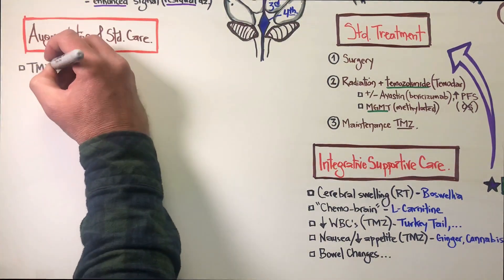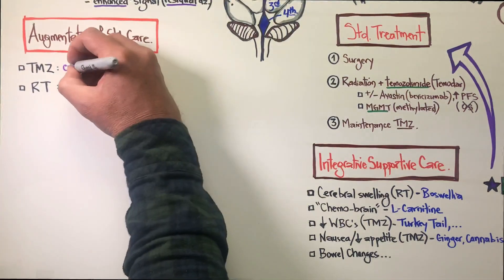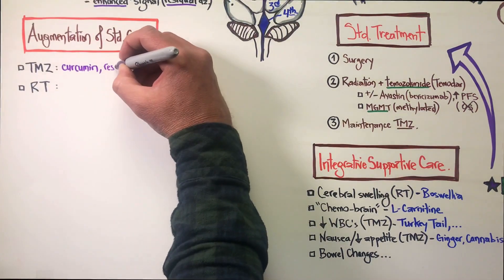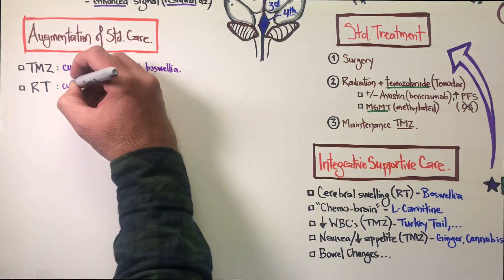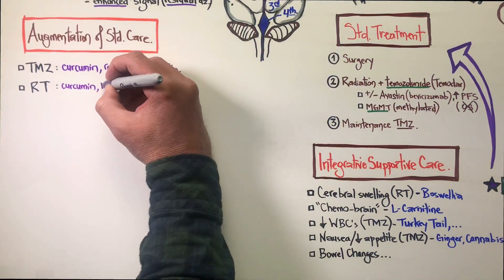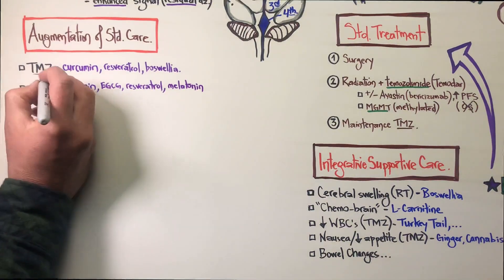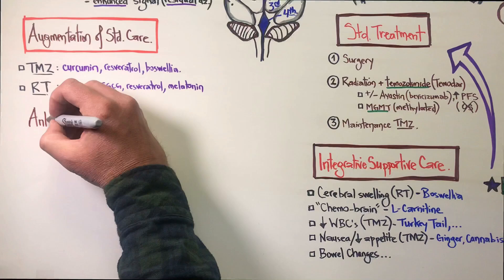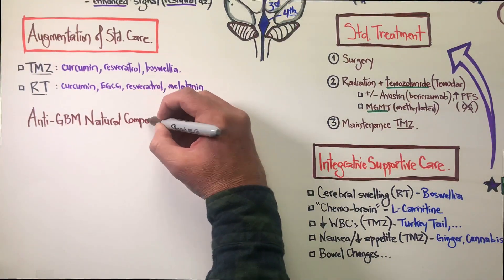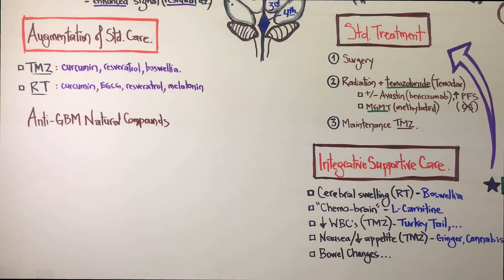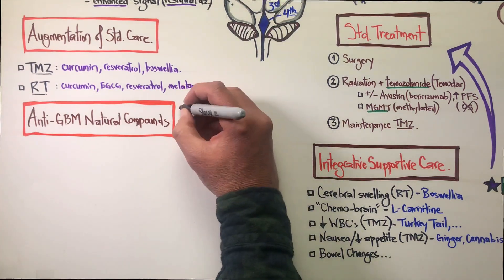Regarding augmentation of treatment — temozolomide and radiation therapy — this comes from trials, including animal studies and some human trials. The main options we use to bolster and get more from standard care include curcumin, resveratrol, boswellia, EGCG from green tea, and melatonin. All of these have evidence that they can be added to your care safely, with the hope of getting more from your standard treatments.